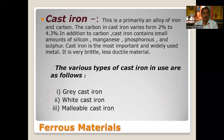Cast iron is primarily an alloy of iron and carbon, with carbon content varying from 2% to 4.3%. In addition to carbon, cast iron contains small amounts of silicon, manganese, phosphorus, and sulfur. It is the most important and widely used material, though it is very brittle and less ductile in nature. The various types of cast iron are grey cast iron, white cast iron, and malleable cast iron.